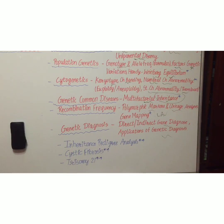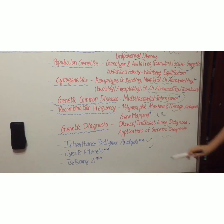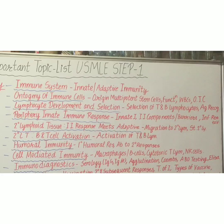The most important topics in medical genetics are inheritance pedigree analysis, cystic fibrosis, and trisomy 21. The next subject is immunology.